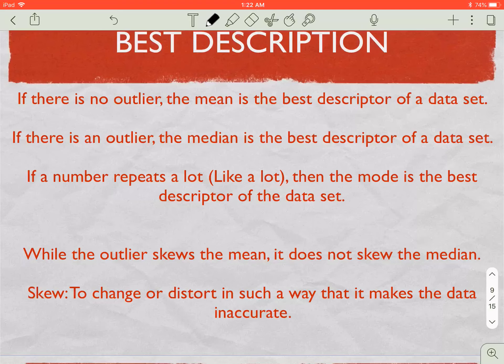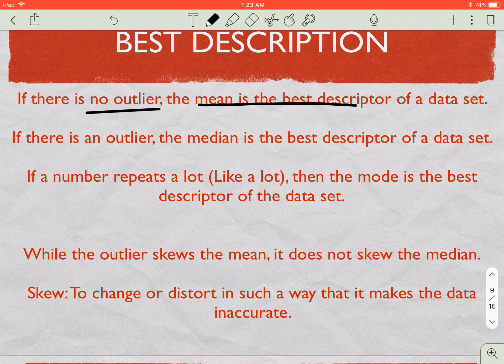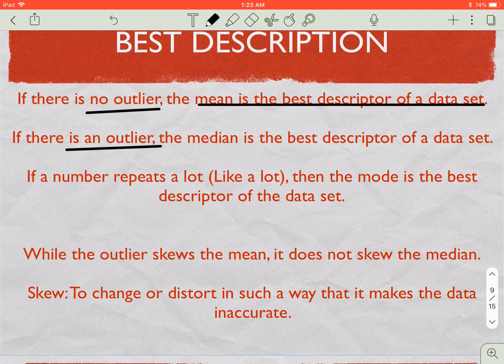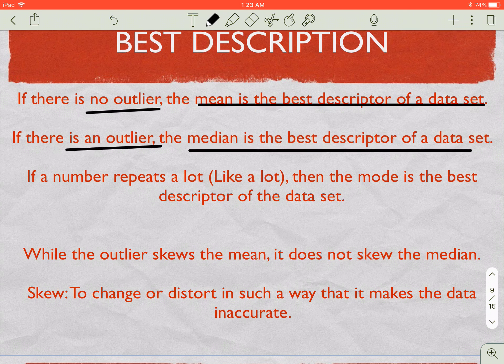It says if there is no outlier and I ask you what best describes the data set, the mean, the average, is the best when there's not an outlier. If there is an outlier, we're going to say that the median is the best descriptor of the data set.